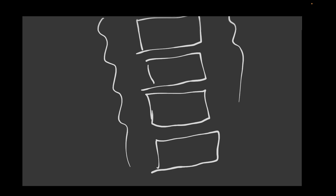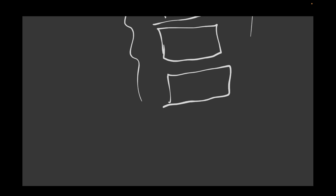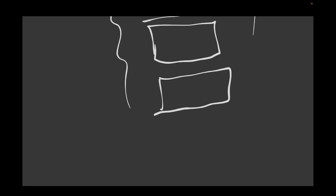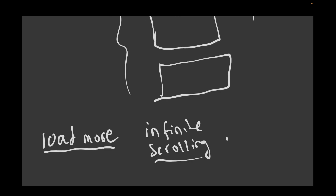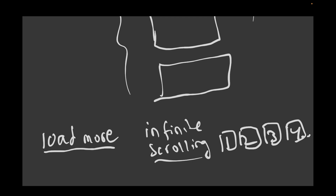There are three types of pagination. The first is 'load more,' the second is 'infinite scrolling,' and the third is page-number-wise pagination — something like page 1, 2, 3, 4, and so on, with a bunch of page numbers depending on the total number of results.